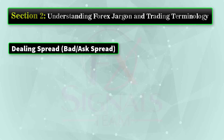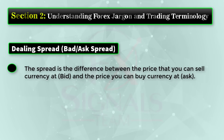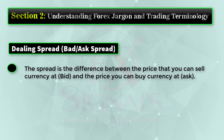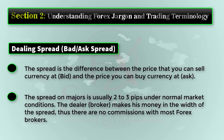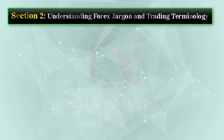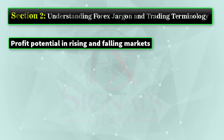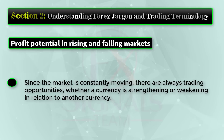Trading spread — bid/ask spread: the spread is the difference between the price you can sell currency at (bid) and the price you can buy currency at (ask). The spread on majors is usually two to three pips under normal market conditions. The dealer or broker makes money from the width of the spread, so there are no commissions with most Forex brokers.